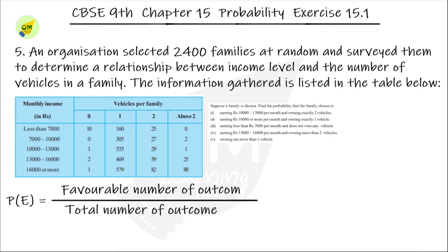The vehicles column starts at zero. If you look at the list, there are about two vehicles obtained. You can have two vehicles. The total number of families is obtained from the table.